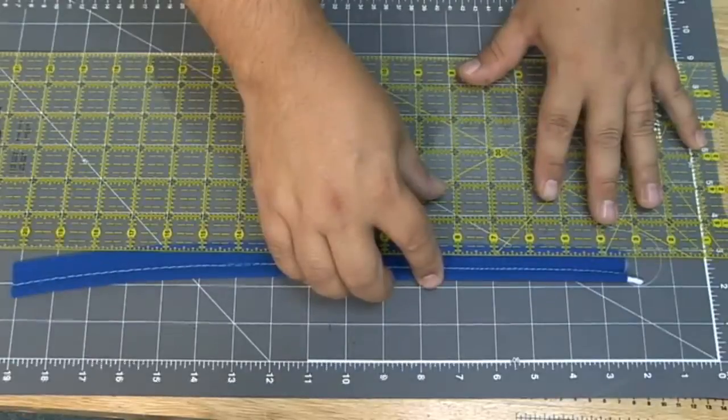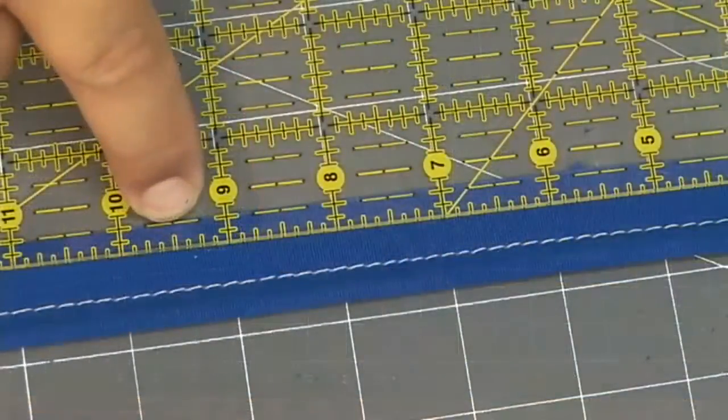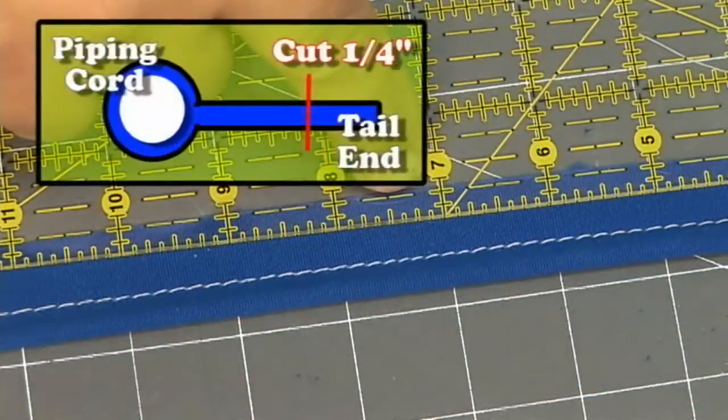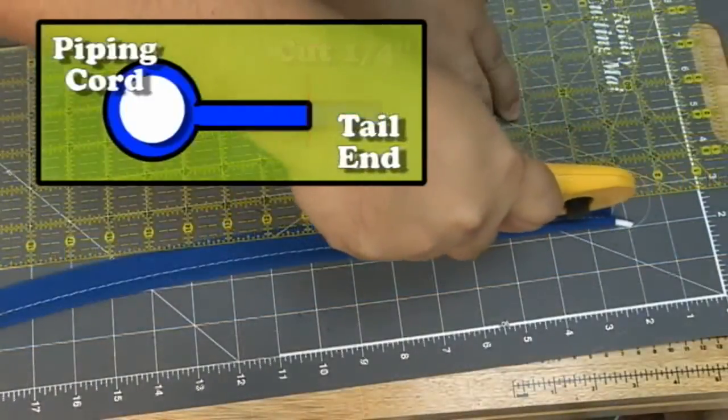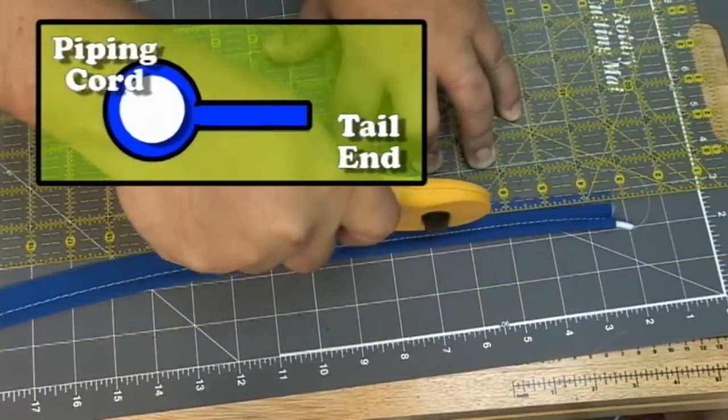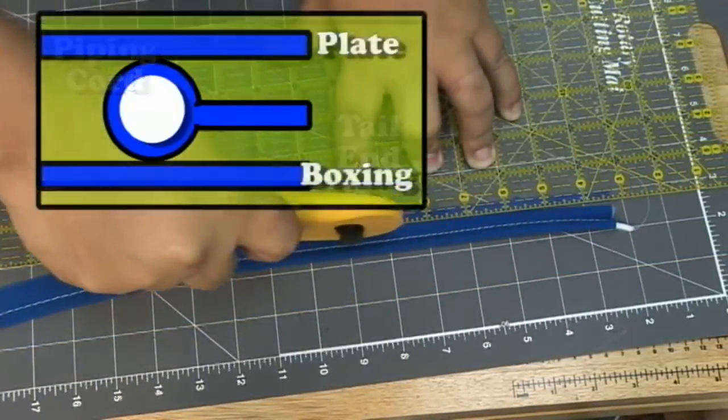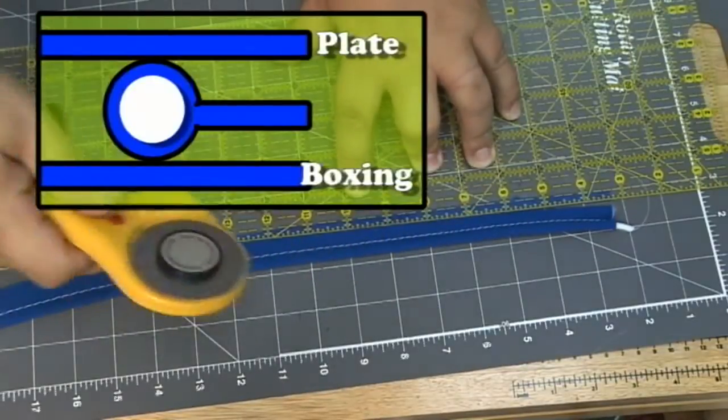When making piping with a 2 inch binder it's necessary that you cut off about a quarter inch of the tadpole section of the piping. So again we're using the rotary cutting tool and the Omnigrid ruler and we're cutting off a quarter inch of that tail.